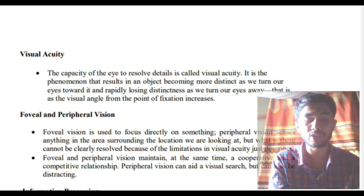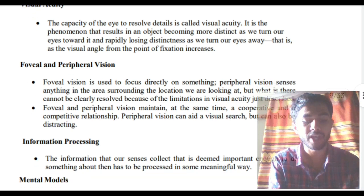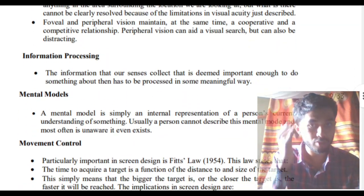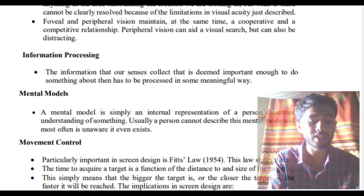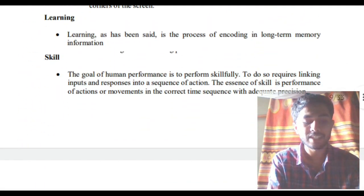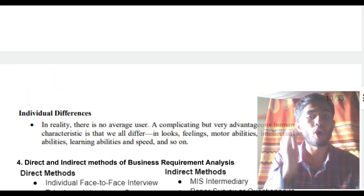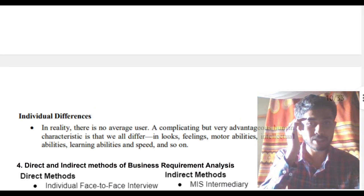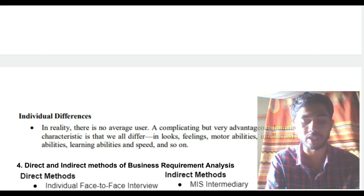Peripheral vision is a very important thing to consider while designing for UI/UX. After that we have information processing, mental models, movement control, skills, learning, and individual differences. All you have to do is mention at least five points in this domain and you will be easily able to answer this question.